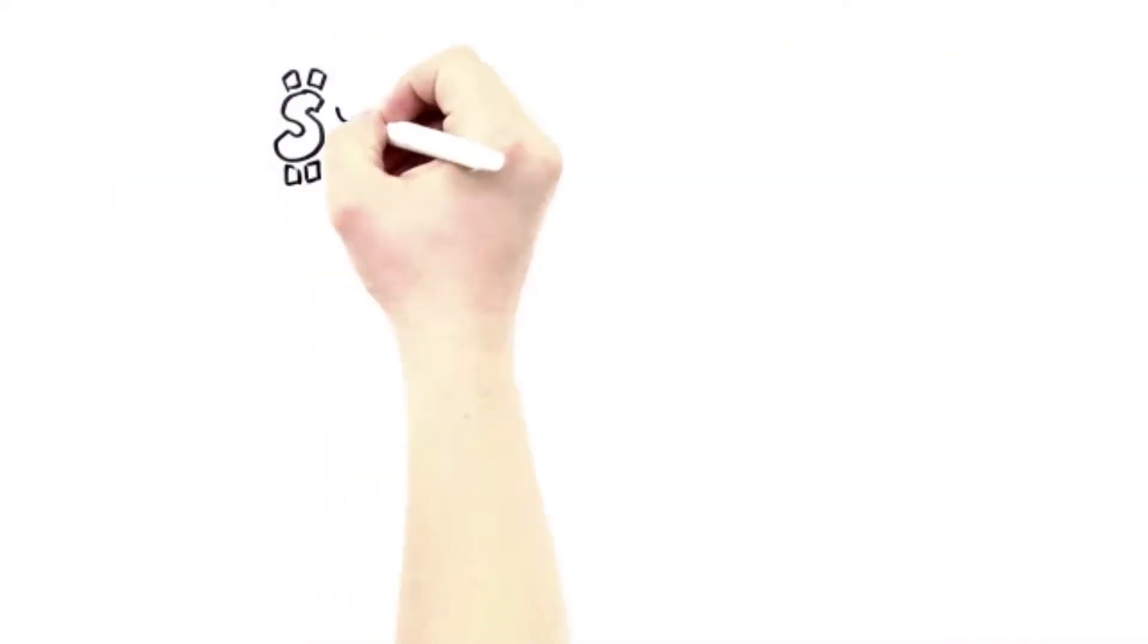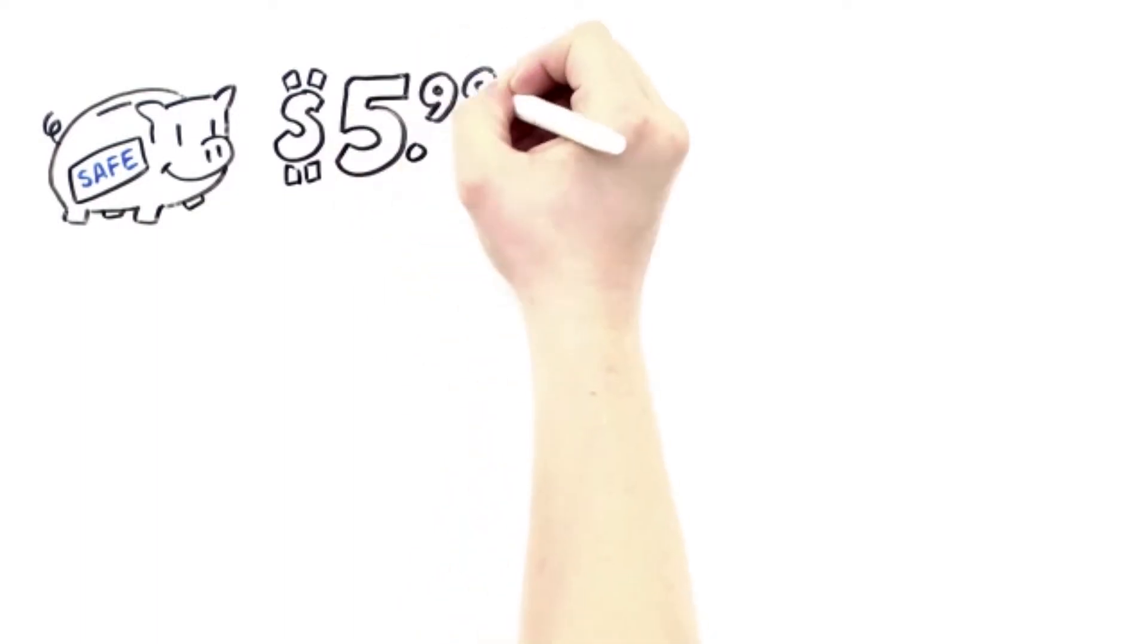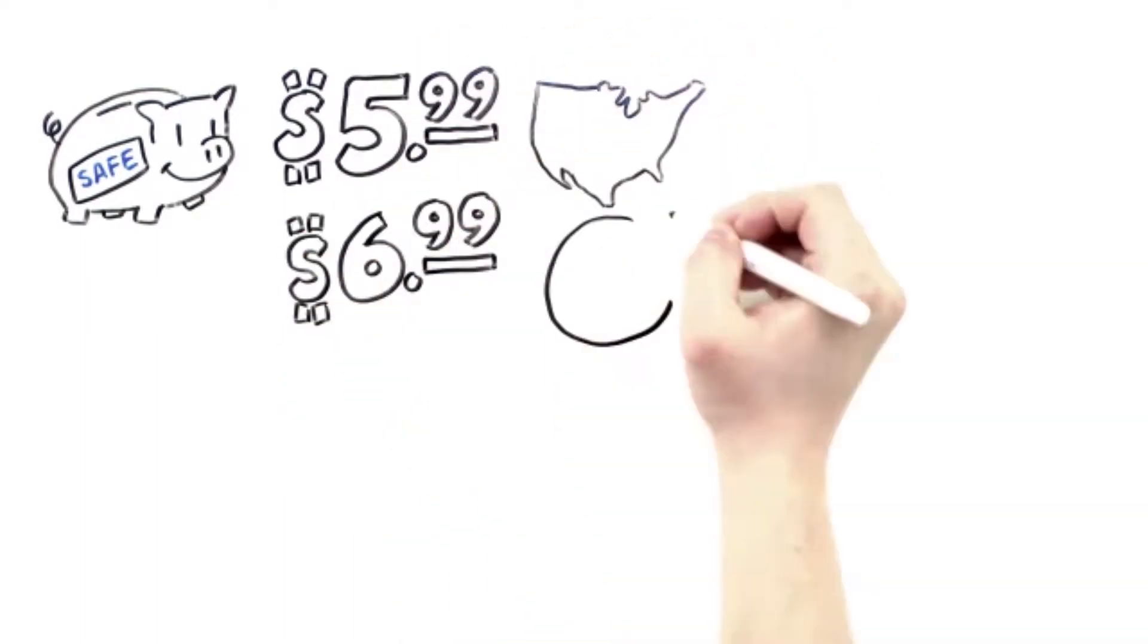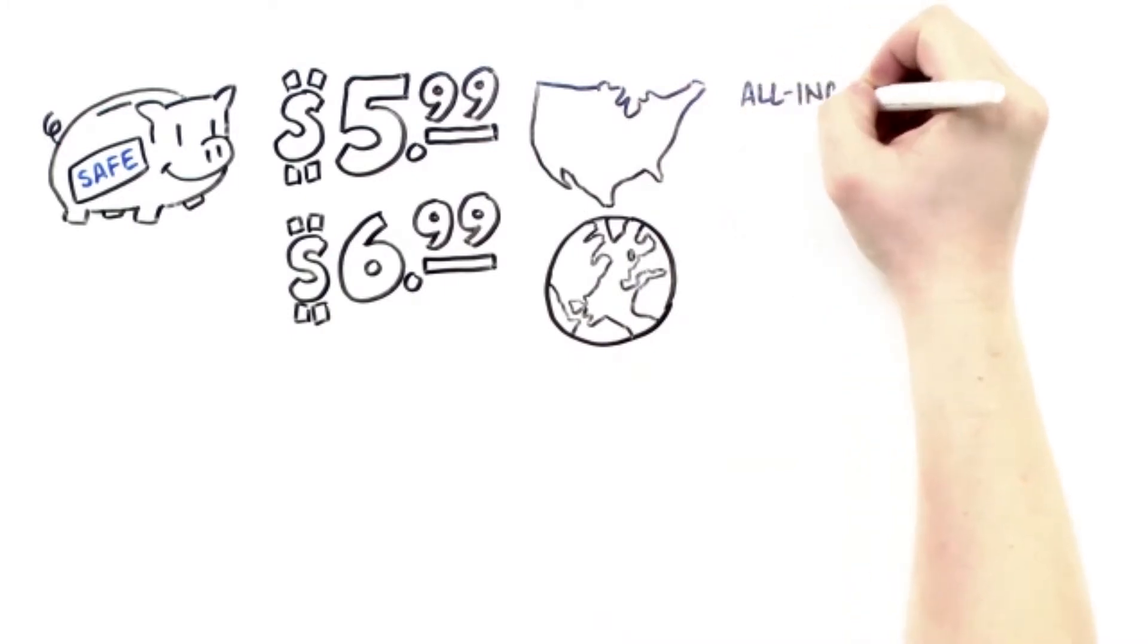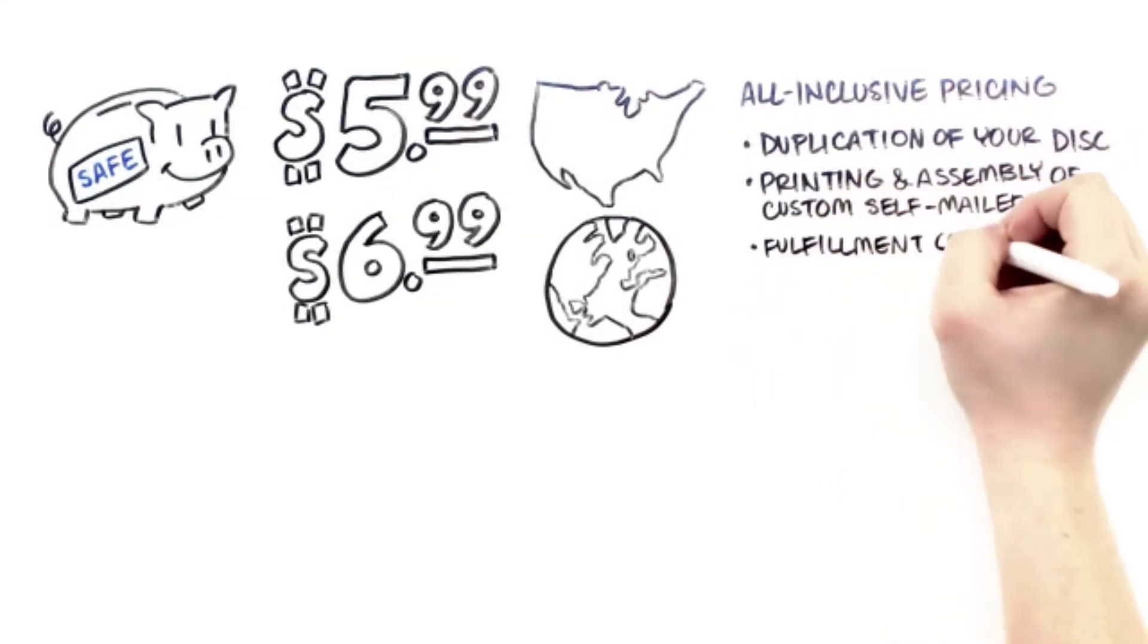So how much does it cost? Well, you don't have to break the bank. It's just $5.99 for US shipments or $6.99 for the rest of the world. And that's all-inclusive pricing for duplication of your disc, printing and assembly of your custom self-mailer, fulfillment costs, and first-class US postage.